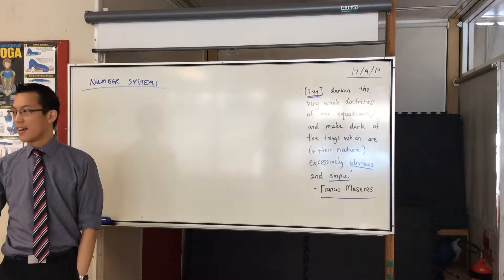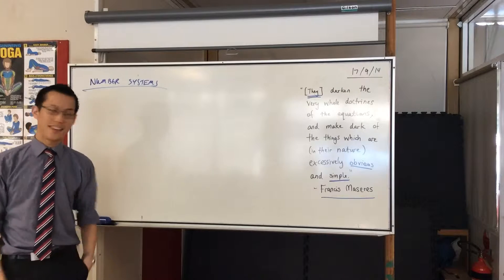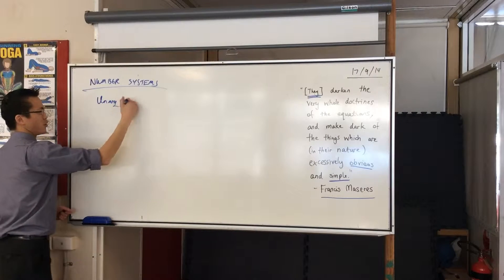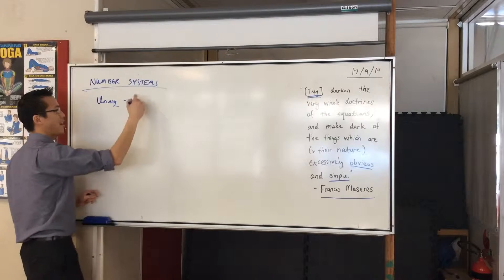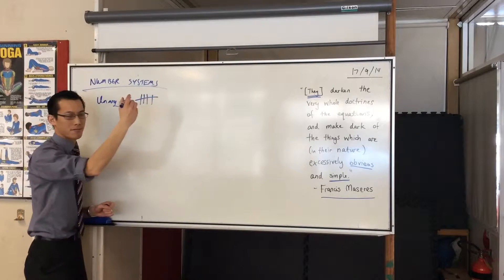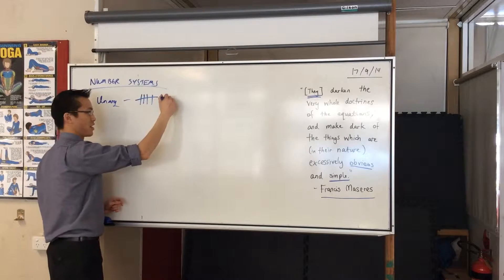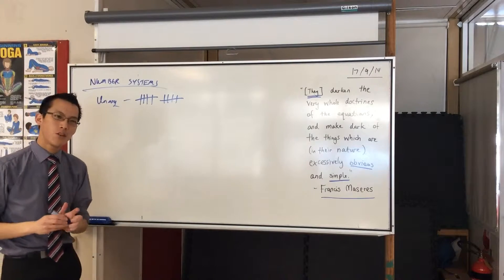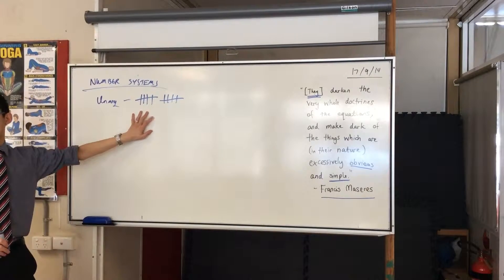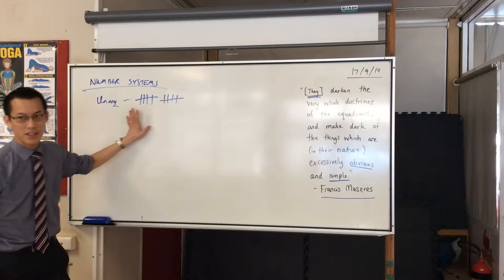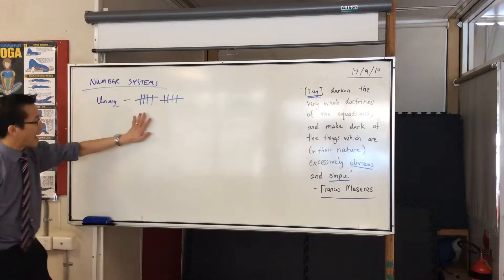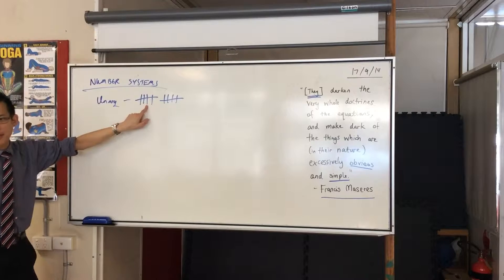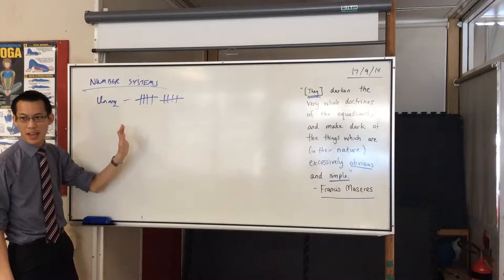So we begin with tallying — the unary system, which is just about 1, 2, 3, 4, 5, 6, 7, 8, 9, 10. Why do you think prehistoric humans came up with this idea? Why did they invent this way of saying, hey, this is five things, and this means another five things, so it's all 10?